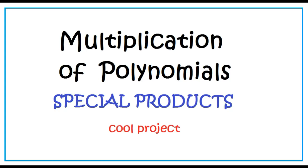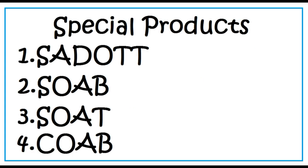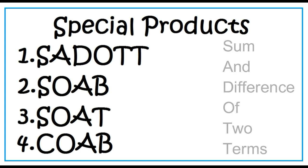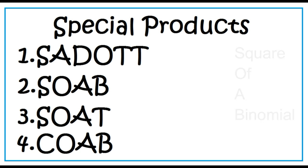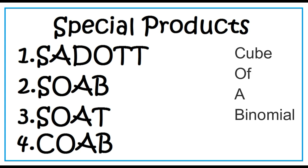Special products. In multiplying polynomials, there are cases in which finding the product is fast and easy. Let's find the product of the following: sum and difference of two terms, square of a binomial, square of a trinomial, and cube of a binomial.